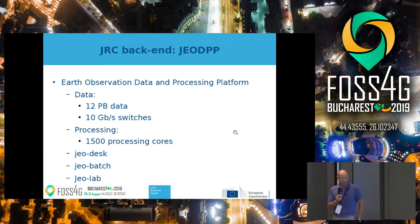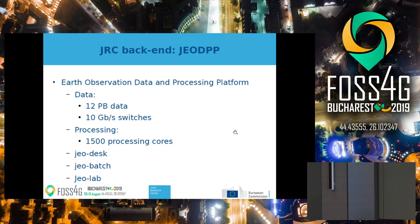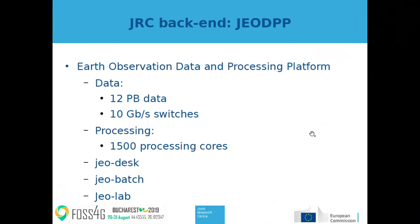So what is this GeoDPP? It is a processing platform with about 12 petabytes of data. Most of it is Copernicus Sentinel-2 data. The data are connected to the processing nodes with 10 gigabit switches. For the processing itself, we have about 1500 cores. I will go through especially two of the three components of this data and processing platform, which we call Geodesk, Geobatch, and Geolab — and especially those last two I will cover in a bit more detail.